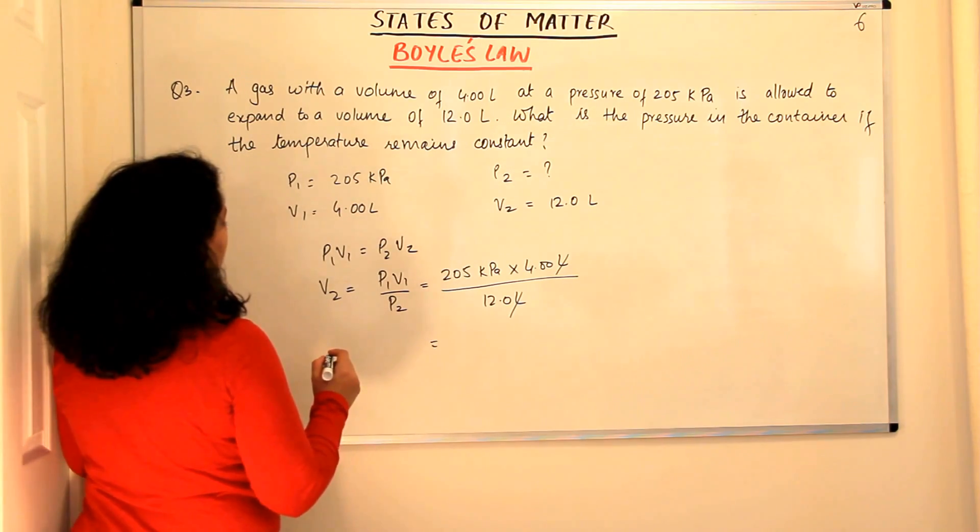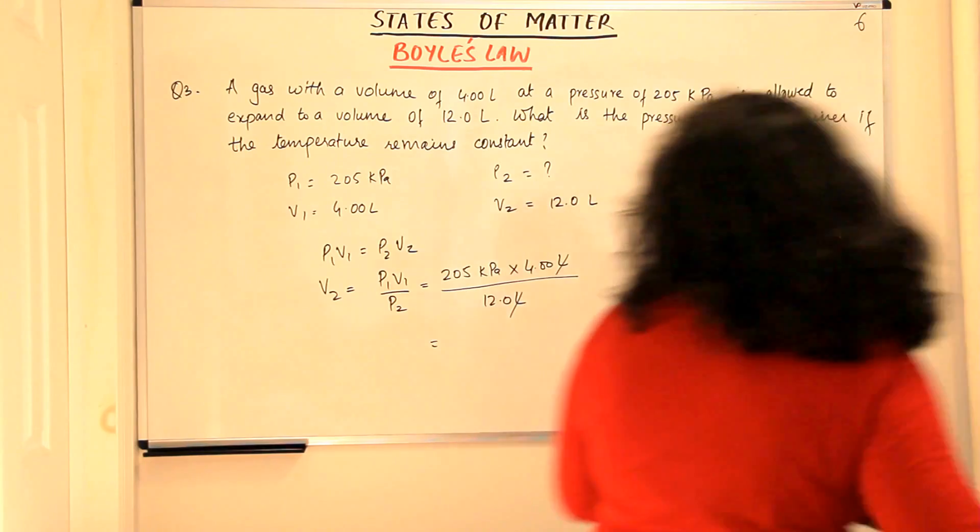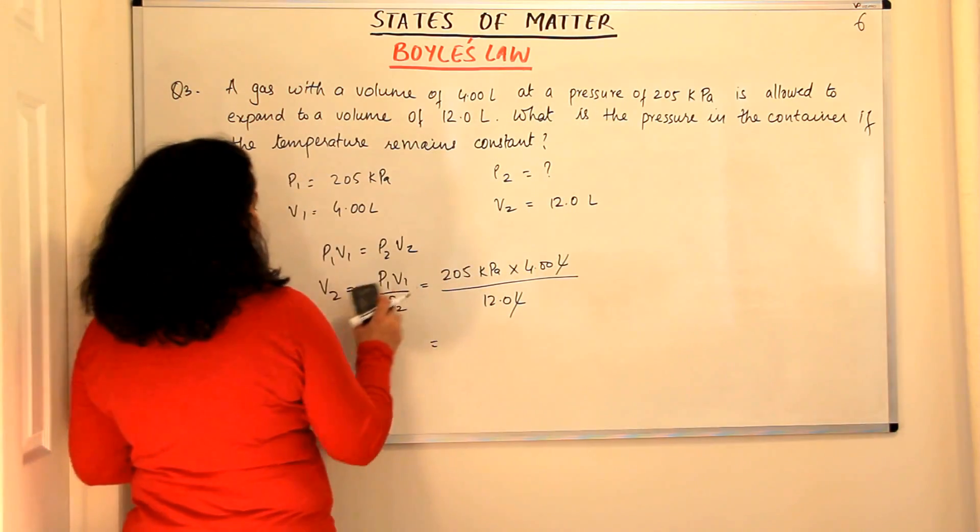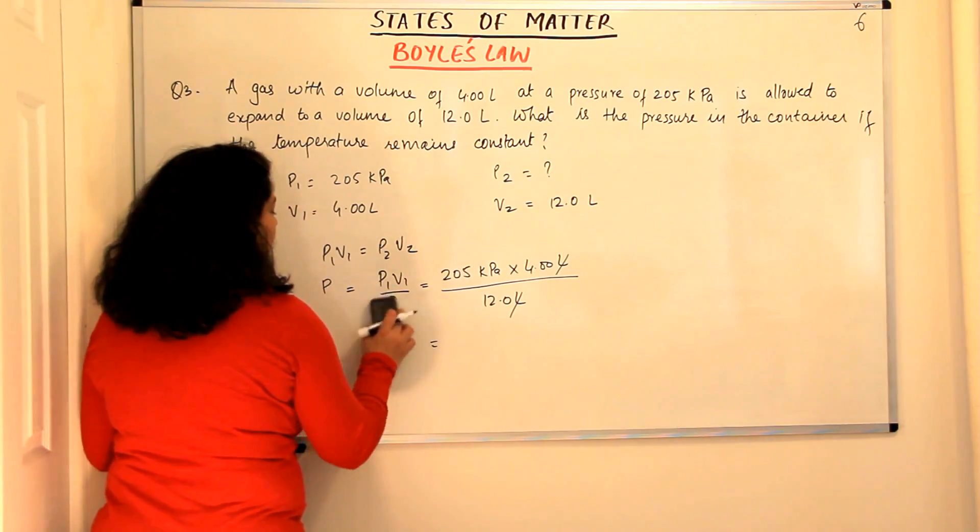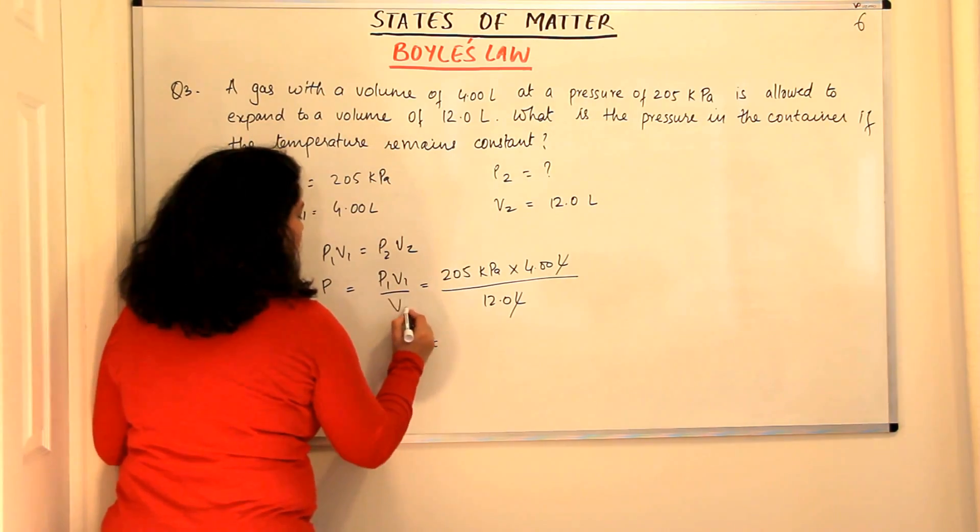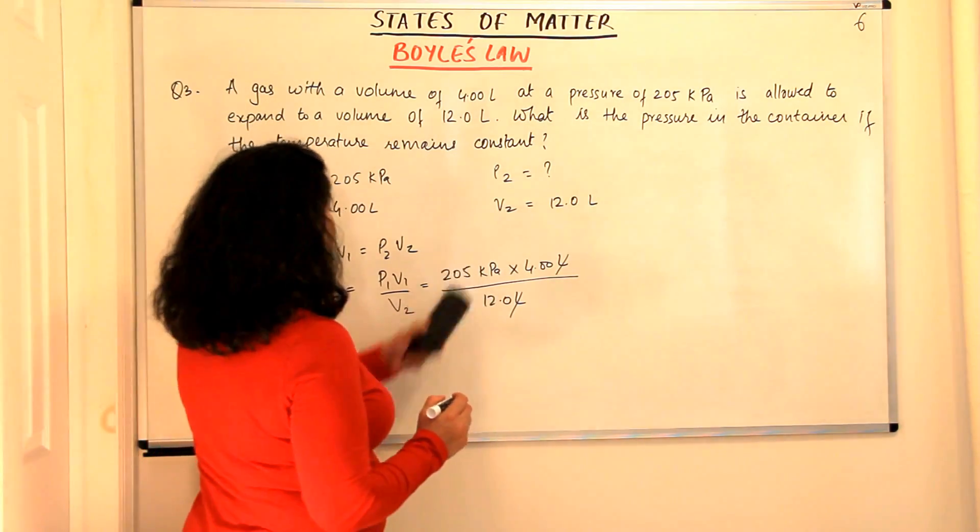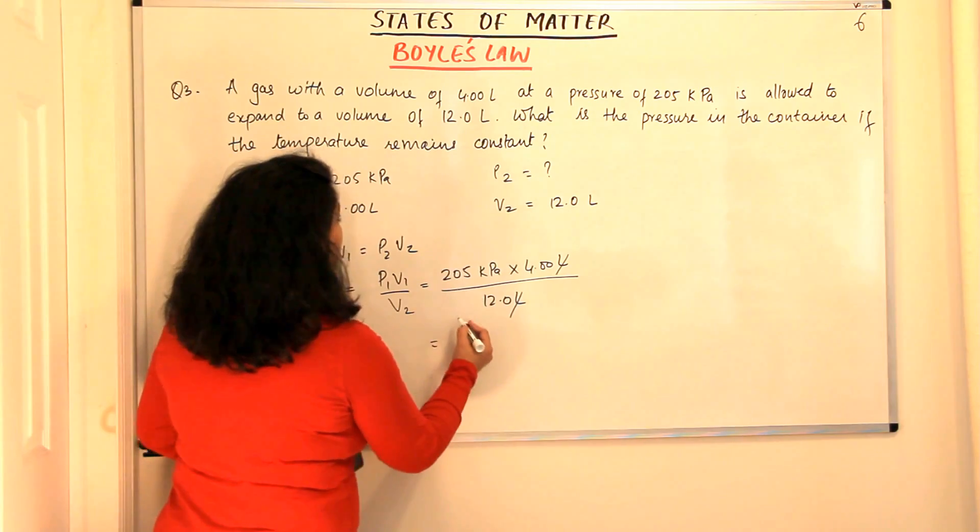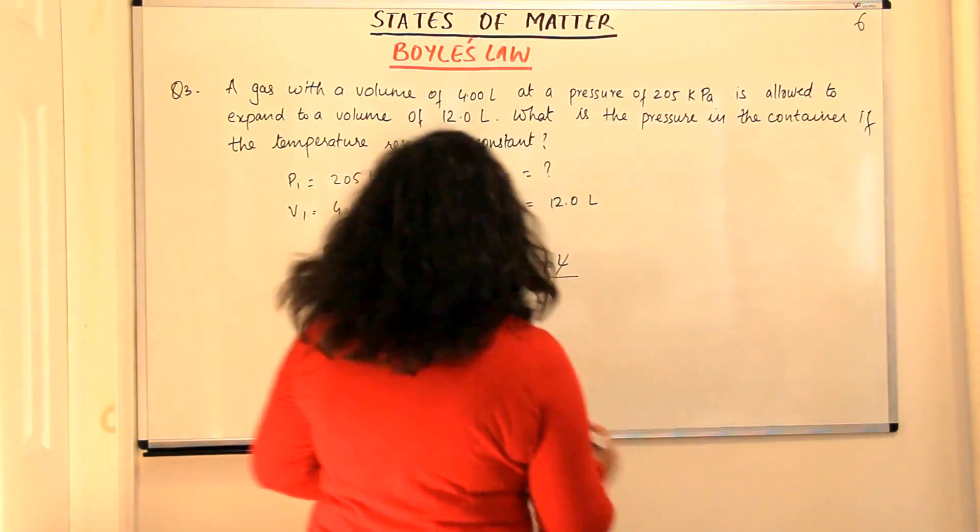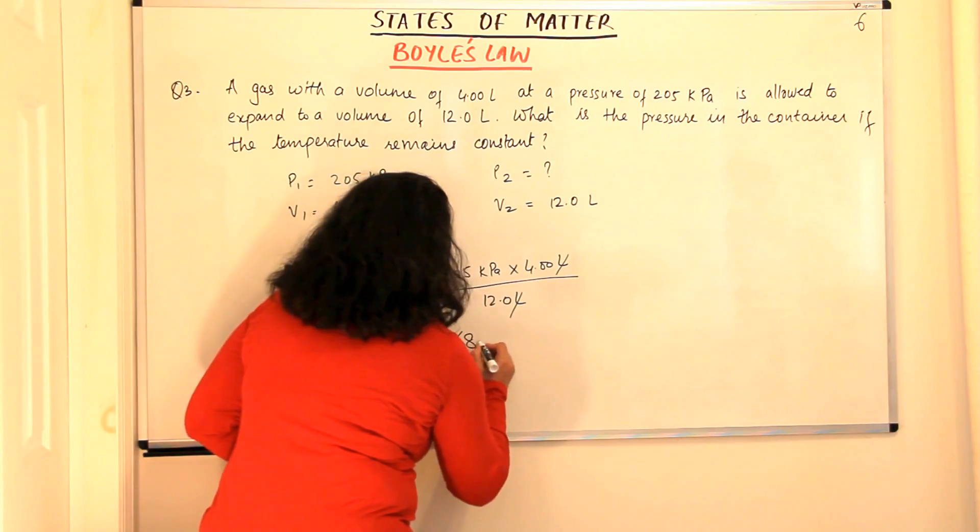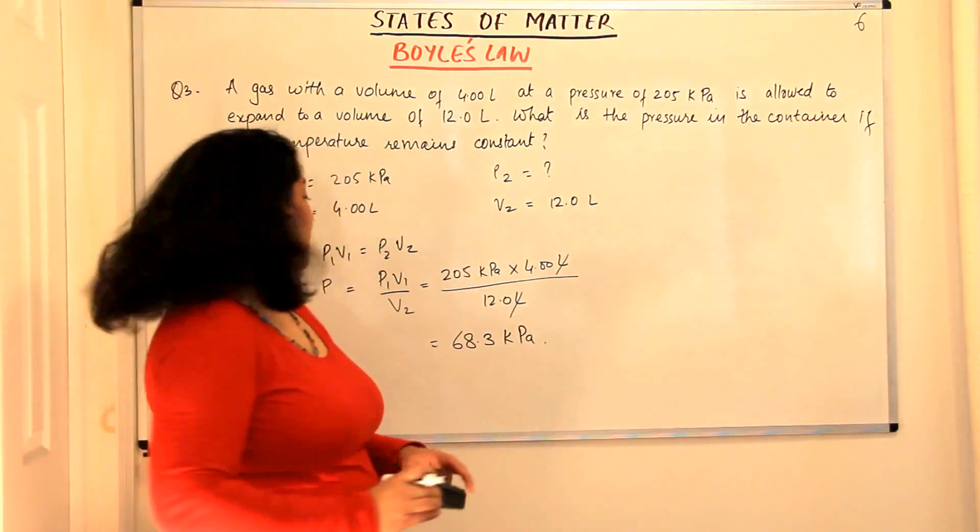Uh-oh, we are looking for pressure, I am sorry. We are looking for pressure, P2. So, let us change this. P2 would be here and P2 would be here. Now, when we solve this, we should get our answer in kilopascals because pressure is in pascals. So, when you solve this, the answer that you get is 68.3 kilopascals would be our pressure.